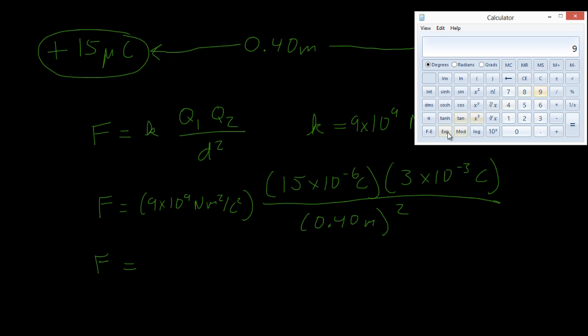So we'll do 9 with an exponent of 9 times 15 with an exponent of negative 6 times 3 with an exponent of negative 3, divided by 0.40 squared equals. And we get 2,531.25. I'll just round this to 2,500.